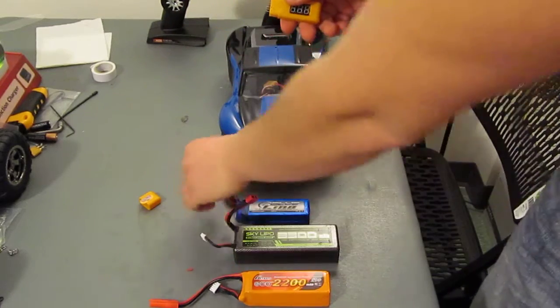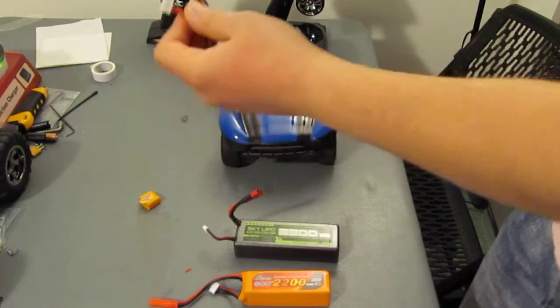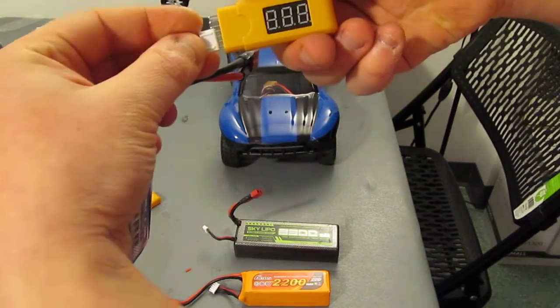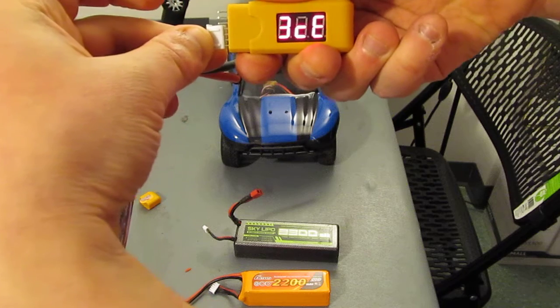All right, so pretty much you take any LiPo battery, take the balancing port, plug it in, and it's supposed to tell you the voltage. Let's see what this says. So this cell is three cell.